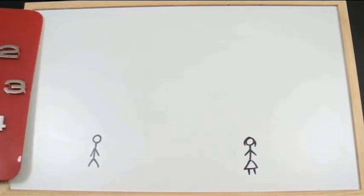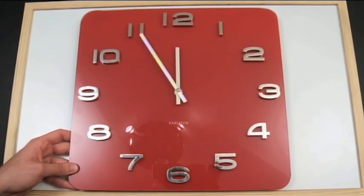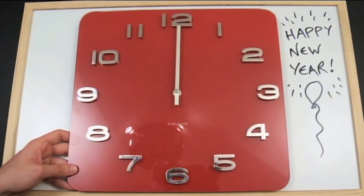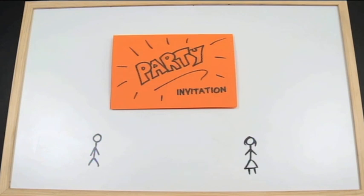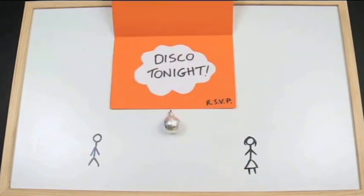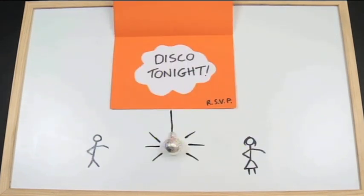If the age of the universe was a 24-hour day, we only showed up at one second to midnight. And disco was only invented one five-thousandth of a second ago.